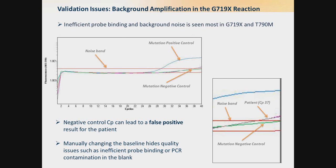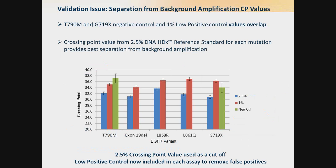Manually changing your baseline each run would hide quality issues such as inefficient probe binding, background amplification, or PCR contamination in the blank. Going back to the validation for these two variants, we see that the last dilution of 1% mutant allele frequency overlaps with the negative control. If we include an additional dilution of 2.5% allele frequency, we get good separation from the negative control. From this work, they decided to include a 2.5% crossing point value as a cutoff in every assay to remove the likelihood of false positives.